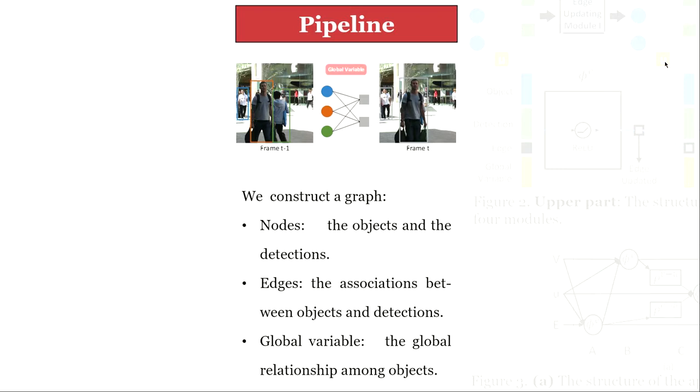We can construct a graph by treating the objects and detections as nodes, and the associations between objects and detections as edges. Each node is associated with the feature of the object or detection, and each edge that connects the object and detection is associated with their similarity score.